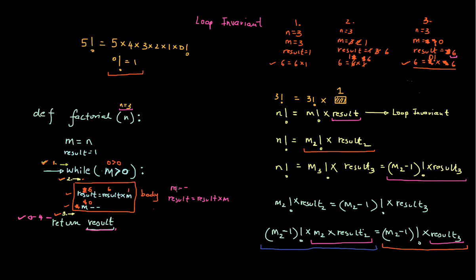Well, if you look at this code over here, m has already changed. If m has already changed, meaning m at this point is only 1 less than the m I started with — meaning m is now this value, which is actually m3. And m3 is nothing but m2 minus 1.